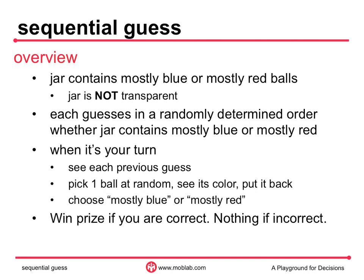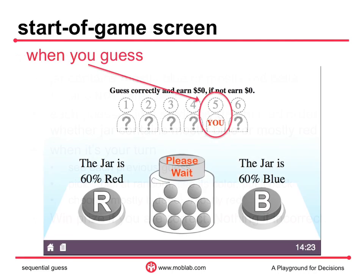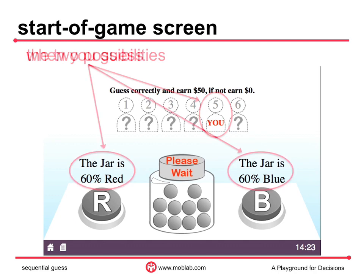Let's take a look at your game screen. When the game starts, you find out when you will make your guess. The owner of this screen will guess fifth out of six group members. You also find out the possible composition of the jar. In this case, the jar either has 60% red and 40% blue, or it has 60% blue and 40% red. These are the only possibilities.